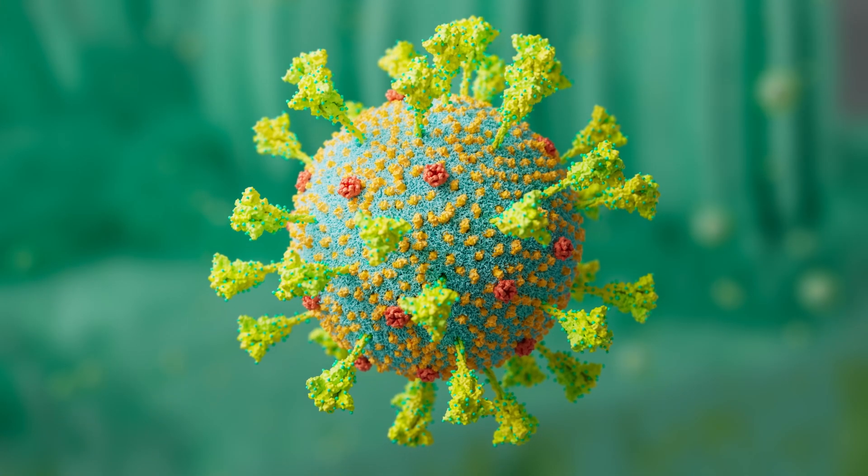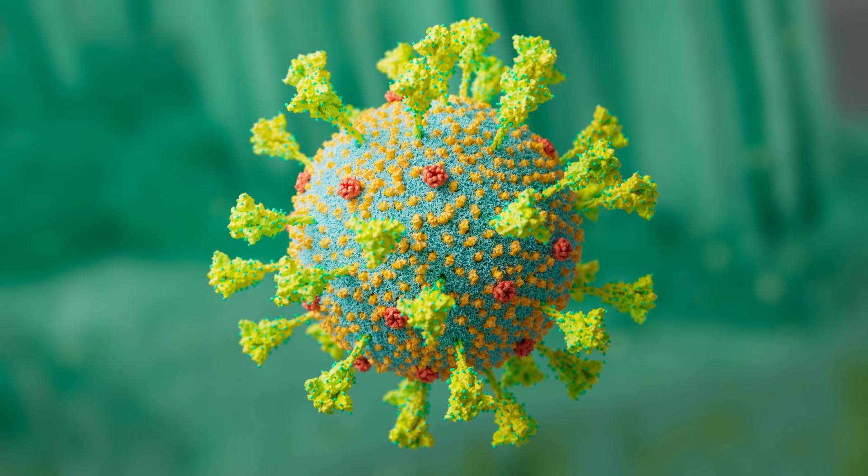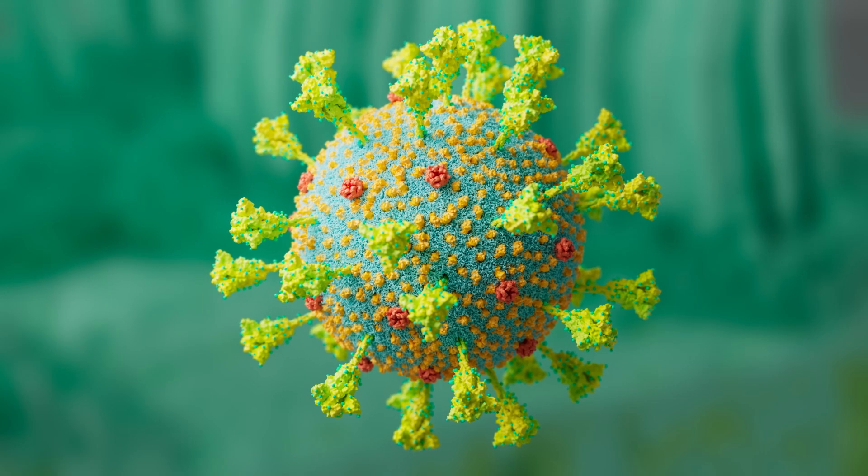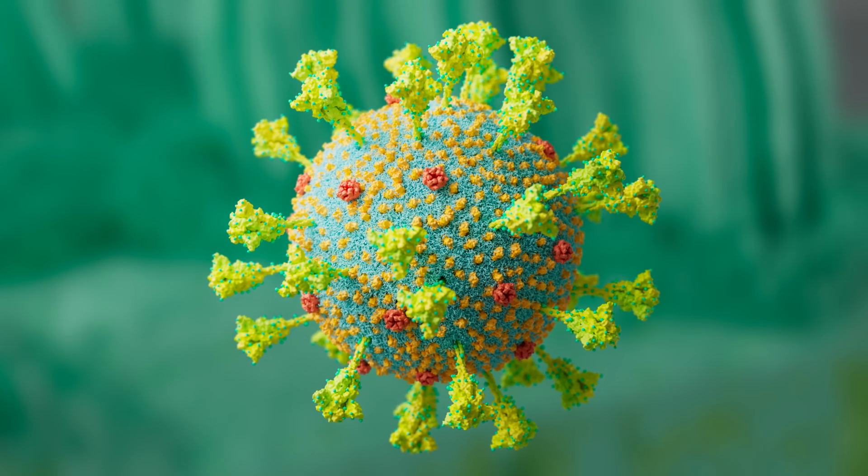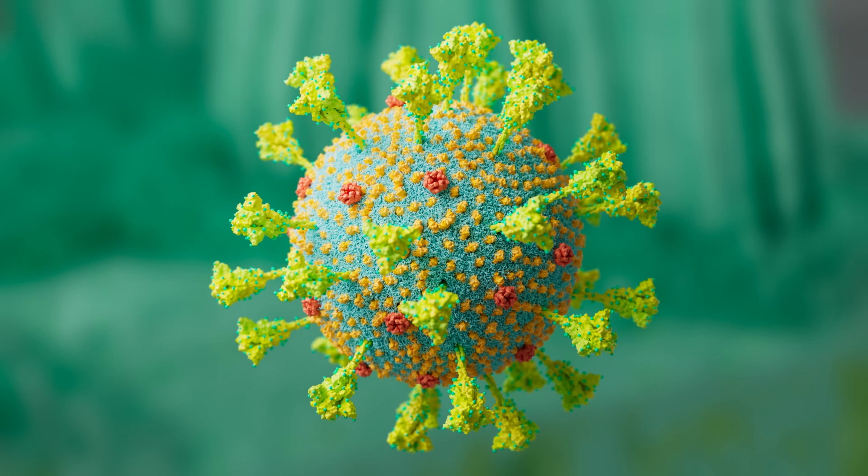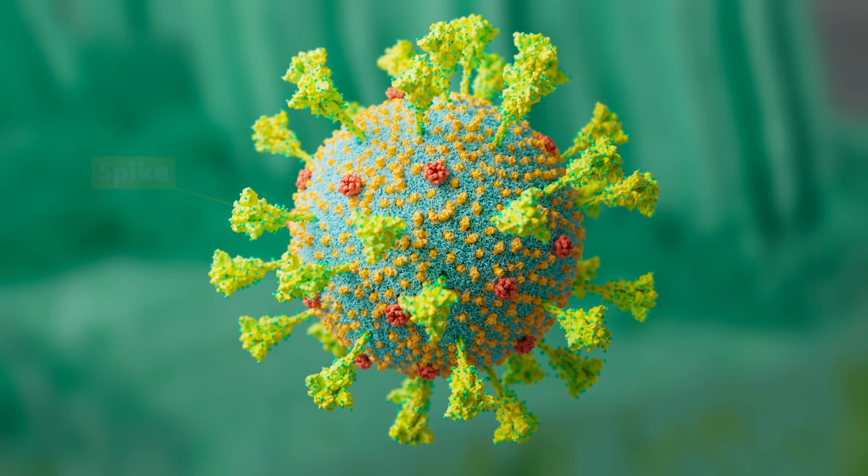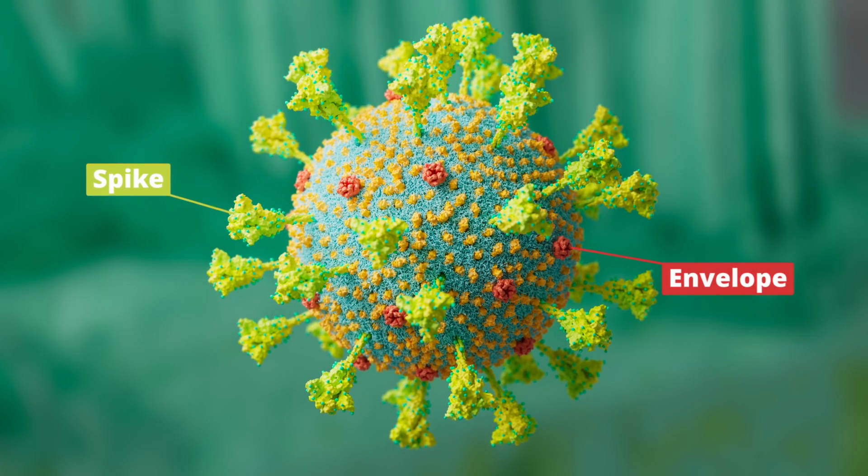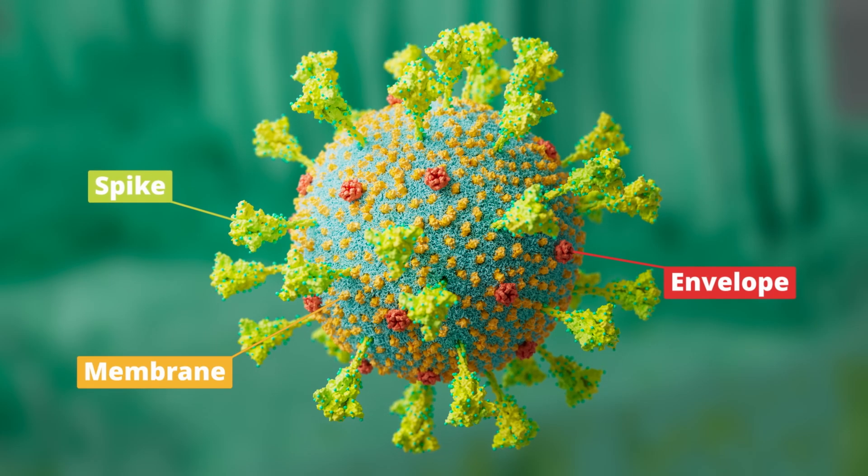The virus itself is deceptively simple. It consists of only a few parts, but together, these parts create a highly effective virus. It has an outer membrane with three types of proteins on it – spike, envelope and membrane proteins.